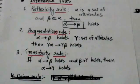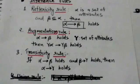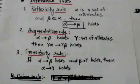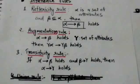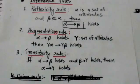The second rule is the augmentation rule. It states that if the functional dependency from alpha to beta holds and gamma is a set of attributes, then the functional dependency from gamma-alpha to gamma-beta also holds. Here gamma-alpha denotes gamma union alpha, and gamma-beta denotes gamma union beta.